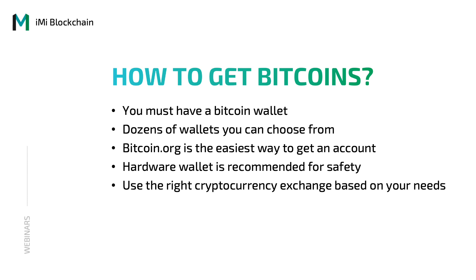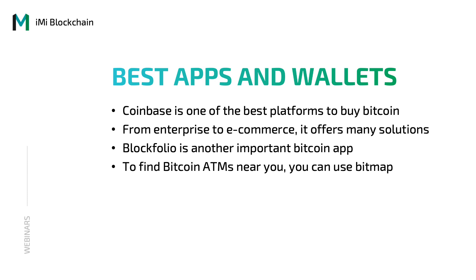Now that you've learned so much about Bitcoin, the question must have come to your head: how can you participate and get Bitcoins? First of all, you need to have a Bitcoin wallet. There are dozens of options for Bitcoin wallets that you can choose from. Bitcoin.org is the easiest way to get an account. Hardware wallets are considered safer than their software counterparts. Then you must select the cryptocurrency exchange right for you based on your needs. Coinbase is one of the best platforms to buy Bitcoin; it offers many solutions from enterprise to e-commerce, especially related to finance.